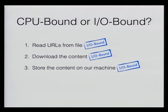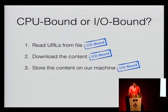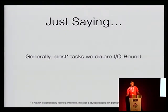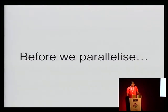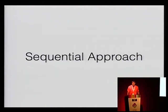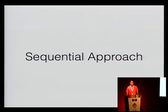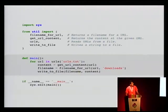Going back to our three original problems: reading URLs from a file is I/O bound because of disk access. Downloading content is I/O bound — HTTP request, we have to block and wait. And storing content on our machine is I/O bound too because we're writing to disk. Generally, a lot of day-to-day tasks are I/O bound. Before we even parallelize, it's good to go through the sequential approach as a baseline to compare how much parallelizing actually improves things.